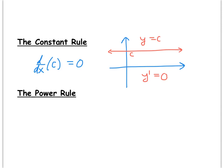Another fundamental shortcut we'll be using a lot is called the power rule. If we take the derivative with respect to x of x to the n, where n represents some real number exponent, the power rule says we drop that original exponent in front and then lose a power of x — giving us n times x to the n minus 1. Let's look at a few simple examples.